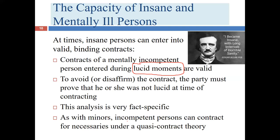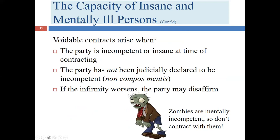Just like minors, incompetent people — even those very detached from reality — still need the same things every human being needs: medical treatment, shelter, clothing, food. They can enter into arrangements for necessaries under the same quasi-contract theory we discussed for minors.